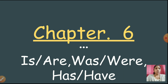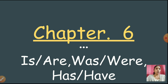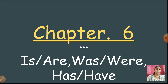Now when are we supposed to use Is? When we talk about only one naming word. For example, He is running. Here we are talking about only one naming word. Now, Are is used when we talk about many naming words. For example, They are running. So here we are talking about more than one naming word. It also shows the action which is present — the action is still going on.